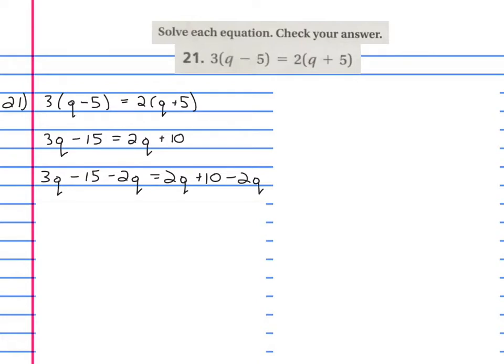So 3q minus 15, what was originally there, minus 2q because I'm undoing this. What was already there, minus 2q, equals 2q plus 10, what was already there, minus 2q. This is what I did to both sides - I subtracted 2q.